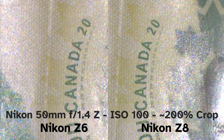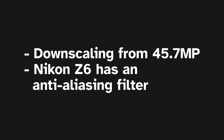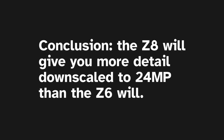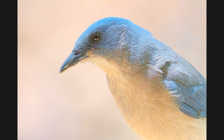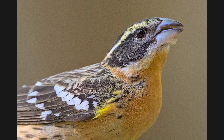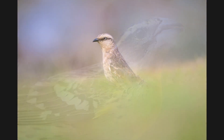This is expected: not only are we downscaling from a 45.7 megapixel sensor to 24 megapixels, but more importantly the Nikon Z6 has an anti-aliasing filter whereas the Nikon Z8 does not. Because of these two factors, the Z8 retains a sharper shot with more information. The Z6's anti-aliasing filter, by softening the image a little, may also soften the noise. And because the Z8 file has more information, it has the potential to have more aggressive noise reduction applied while still retaining image fidelity.